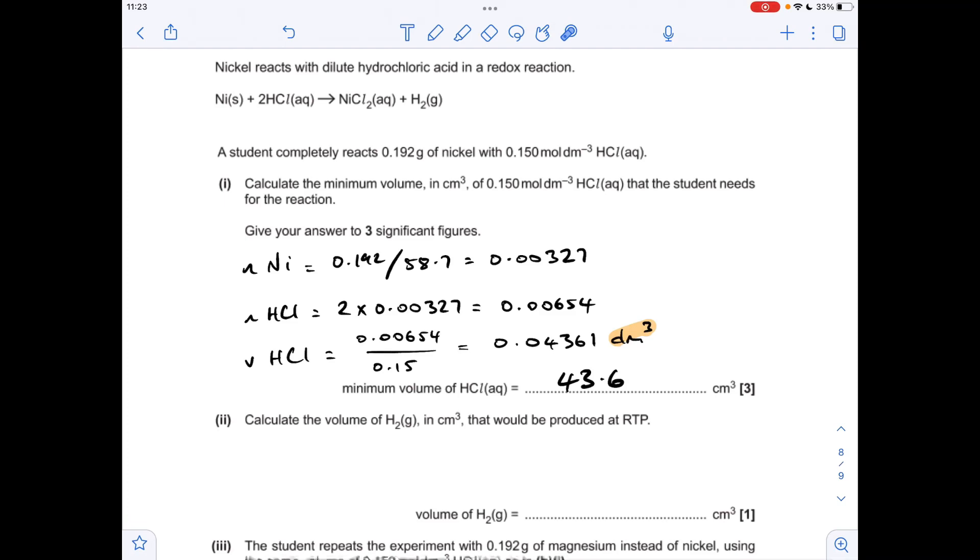Next part. So the volume of hydrogen in cm cubed produced at RTP. Well the mole ratio between the nickel and the hydrogen is 1 to 1. So we're going to get that many moles of hydrogen. So to turn that into a volume at RTP in centimetres cubed we need to multiply the moles by 24,000, which comes out at 78.5 centimetres cubed.